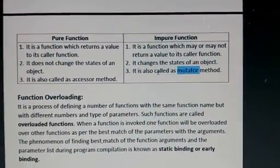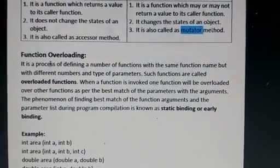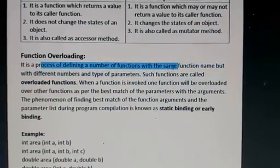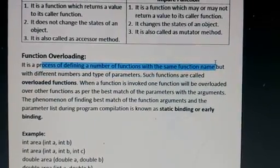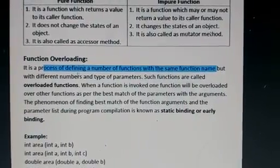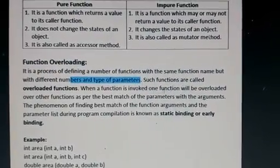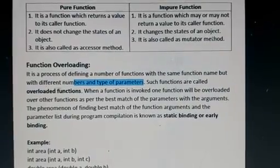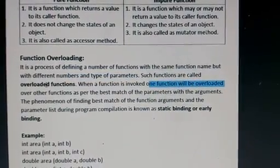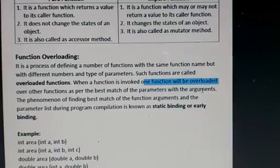Now, function overloading. Function overloading is a process of defining a number of functions with the same function name — that means more than one function will have the same name but with different numbers and types of parameters. Such functions are known as overloaded functions. When a function is invoked, one function will be overloaded over others as per the best match of the parameters with the arguments.